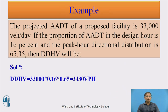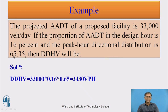Another example: given an ADT of 33,000 vehicles per day, K is 16 percent of ADT, and directional distribution is 65/35. We take the higher directional value of 65 percent. So DDHV equals 0.65 multiplied by 0.16 multiplied by 33,000, giving the Directional Design Hourly Volume.